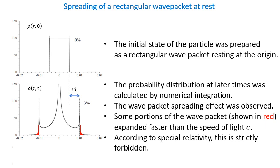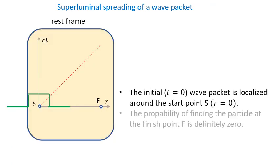According to special relativity this is not allowed to happen. Let me show what is going on in the Minkowski spacetime. At time t equal to 0, the initial rectangular wave packet is placed at the origin. This is the starting point S. Obviously the probability of finding the particle at the finish point F is exactly 0.